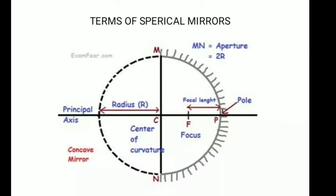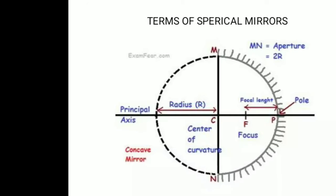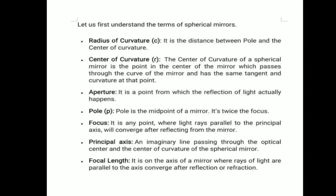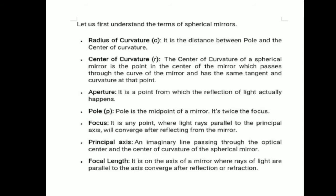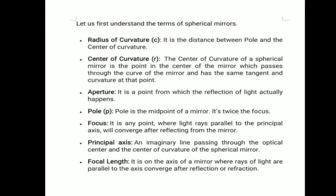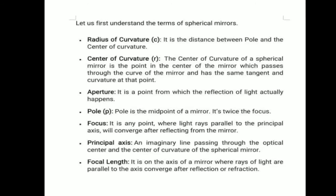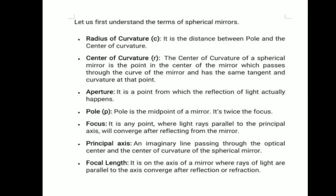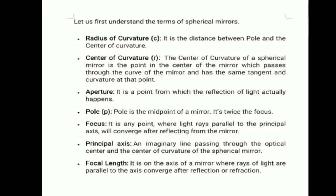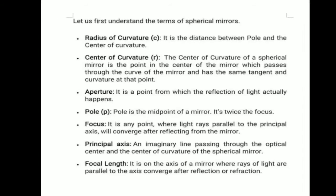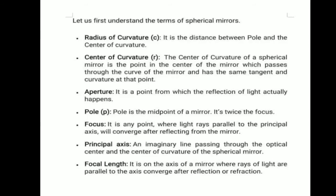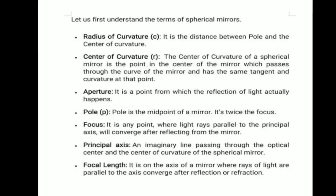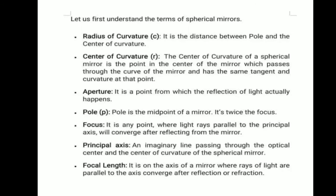Let us first understand the terms of spherical mirrors. First, we have the radius of curvature — it is the distance between the pole and the center of curvature. Center of curvature is the point in the center of the mirror which passes through the curve of the mirror and has the same tangent and curvature at that point. Aperture is the point from which the reflection of light actually happens. Pole is the midpoint of a mirror.